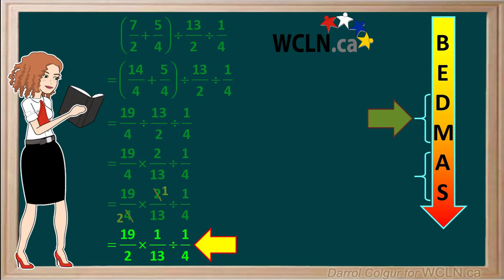So our question now is 19 over 2 times 1 over 13 divided by 1 quarter. We can do the multiplication first. 19 times 1 is 19, and 2 times 13 is 26. So the product of these two fractions is 19 over 26.